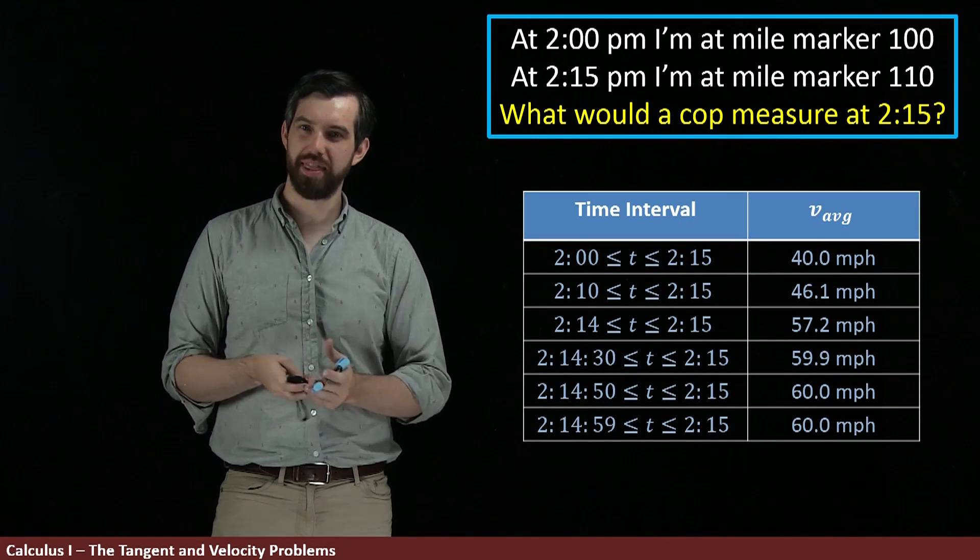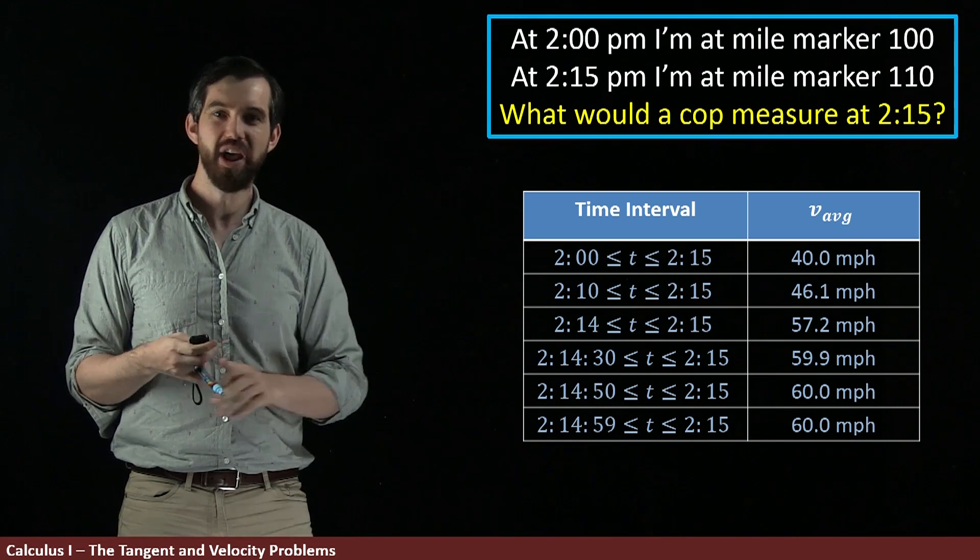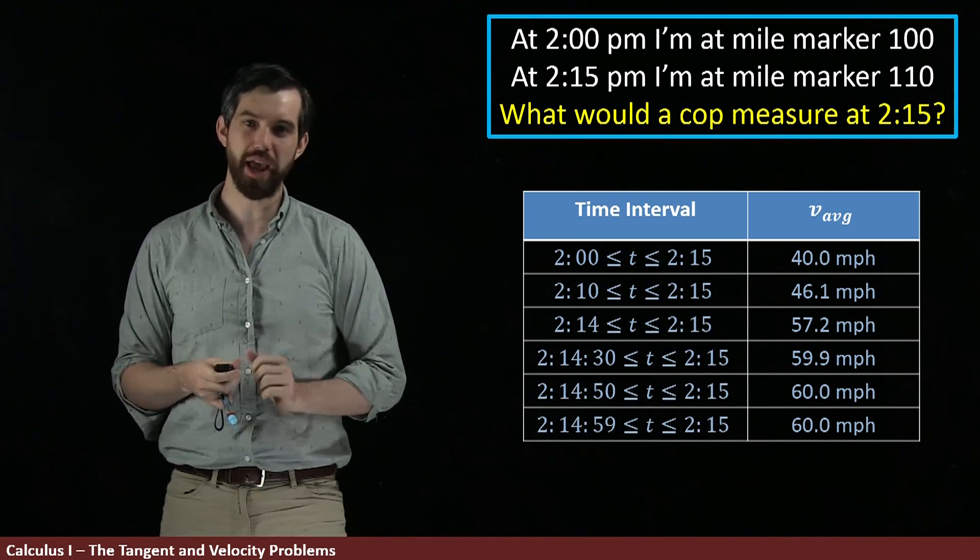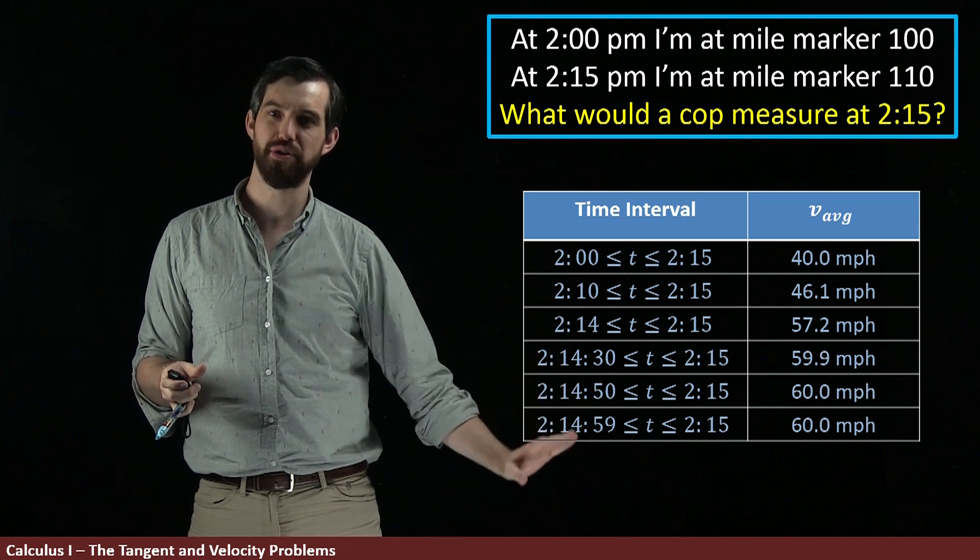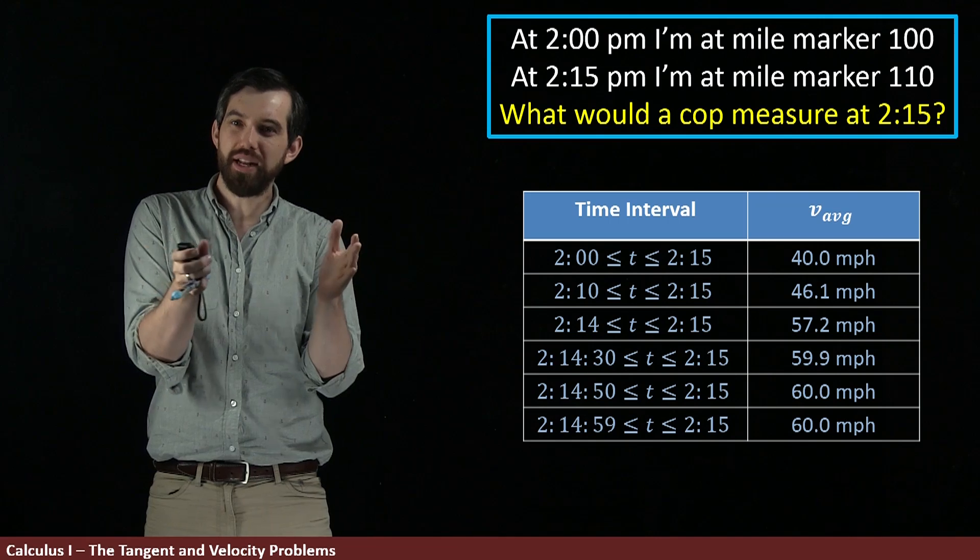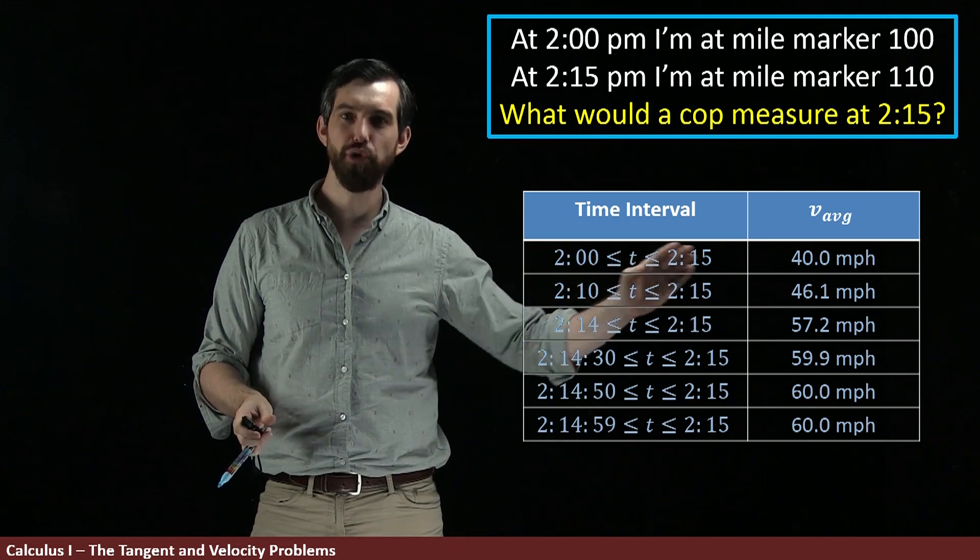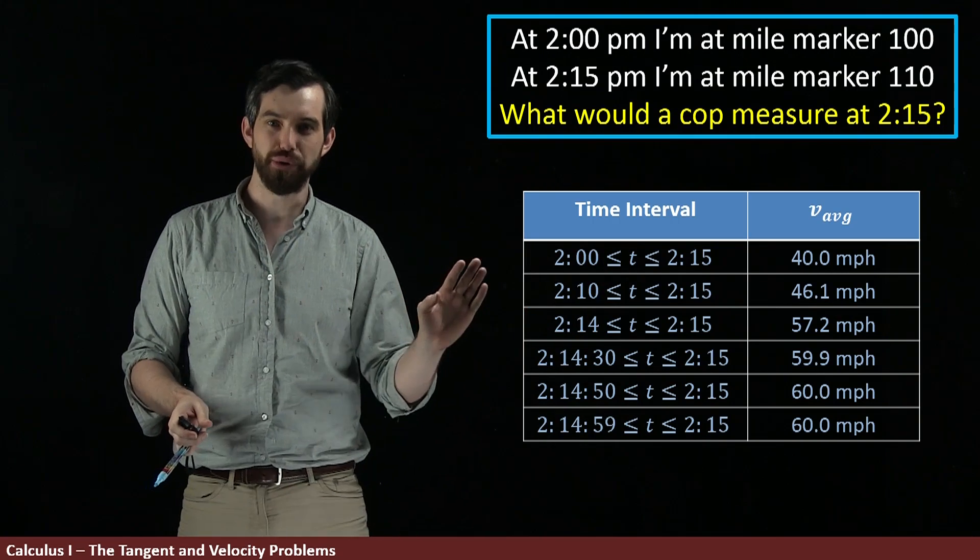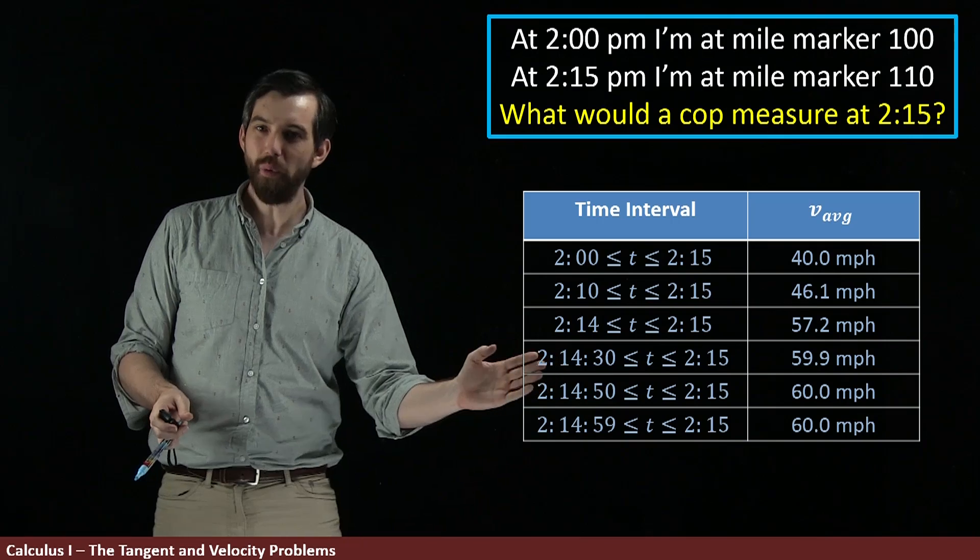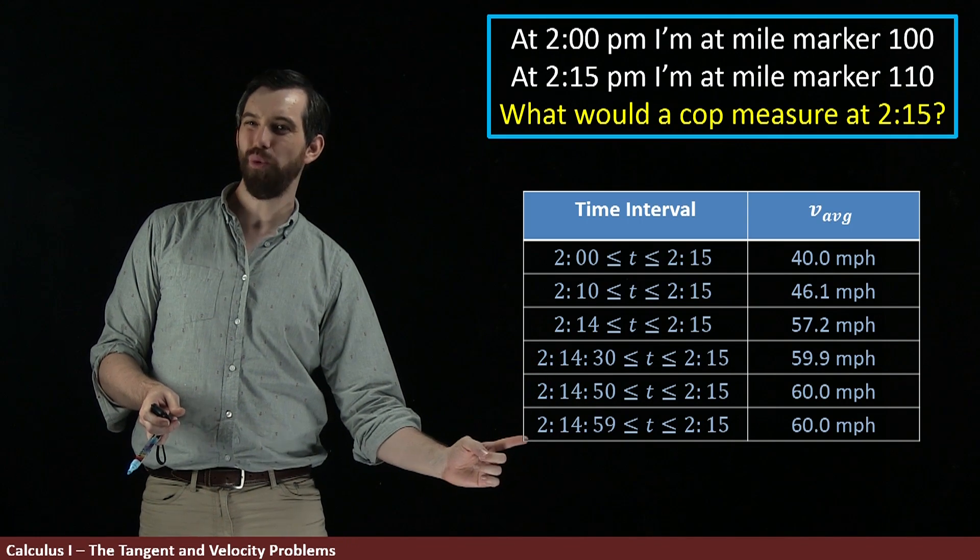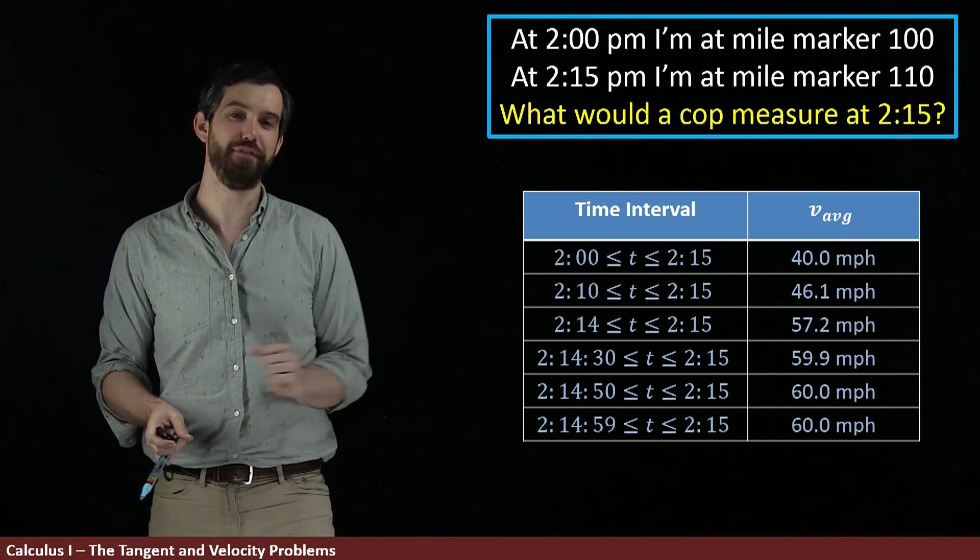I'm going to give you a little bit of a different way to think about the instantaneous velocity. Suppose I had a whole chart of information here. And what I want you to note is that what's going on here in this time interval column is that I'm getting smaller and smaller and smaller time intervals. So the first row here is the 2 to the 2:15, but then I do 2:10 to 2:15, 2:14 to 2:15, and I go all the way down until I'm like only a one second interval, 2:14 and 59 seconds all the way up to 2:15.